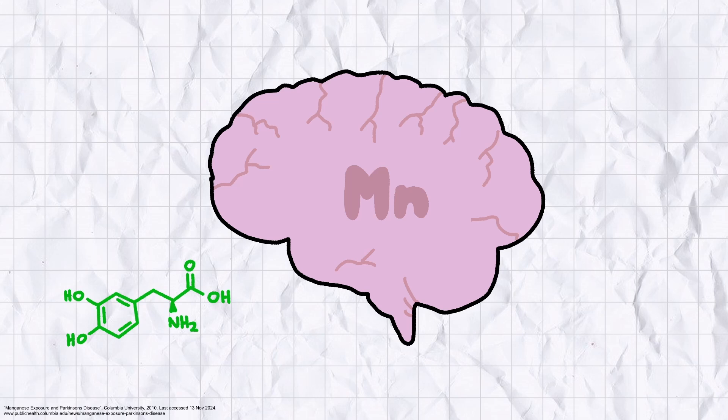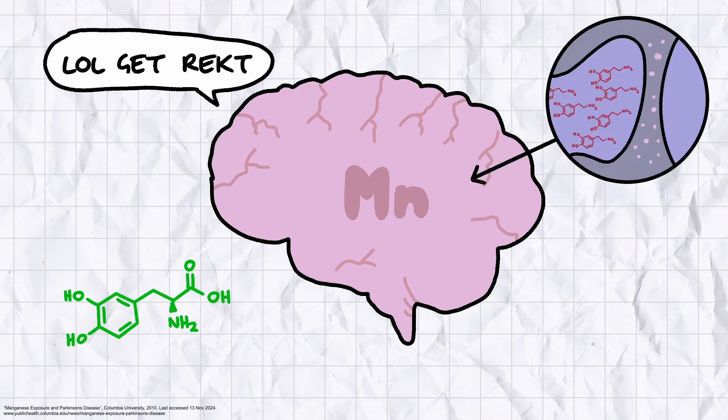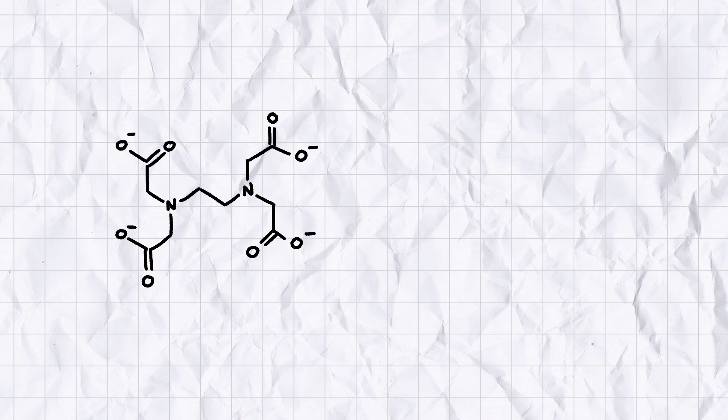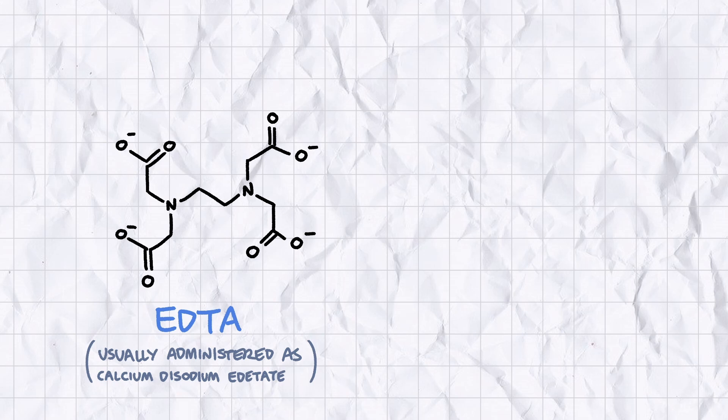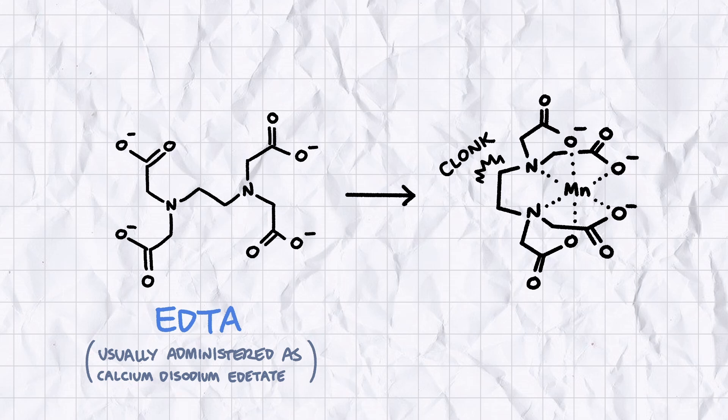Levodopa is a poor treatment for manganism because the root cause isn't the same as Parkinson's disease. When manganese builds up in the brain, the problem isn't dopamine production, it's the brain's ability to release available dopamine into your synapses. At time of recording, the best treatment for manganism is chelation therapy. EDTA, a compound that binds strongly to metal ions, is injected into the patient's bloodstream with an IV drip. If all goes well, the binding agent will bind to the manganese ions, whereupon they can be safely excreted out in the patient's urine.